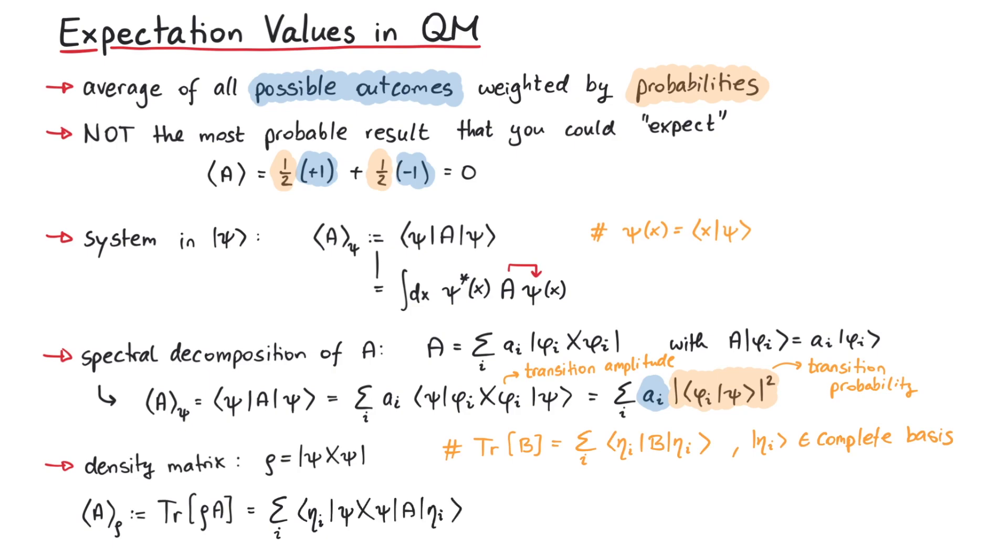If we do this, we get an expression containing two complex numbers, which we can move around if we wanted to, since they are not operators. After doing that, we can perform the sum over the basis states, and since they belong to a complete basis, they give us the identity operator. Therefore, we get psi A psi, which means that we get the same result from working with density matrices.